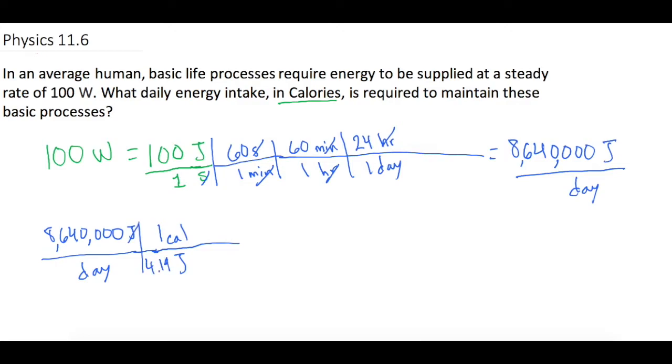All right, so now our joules are going to cancel, and we're left with calories per day. So we take 8,640,000, and we're going to divide that, because it's on the bottom, by 4.19. And that gives us 2,062,052.506 calories per day.